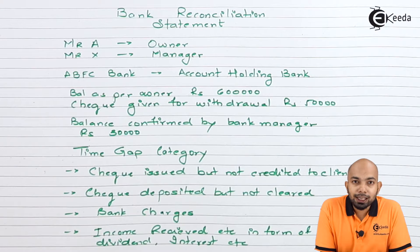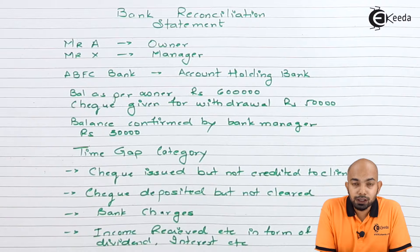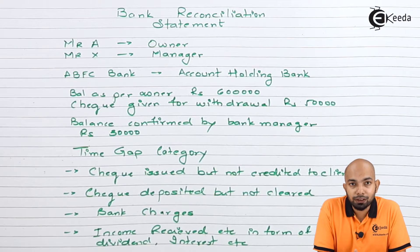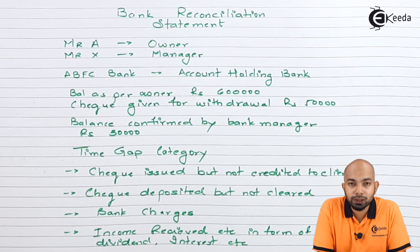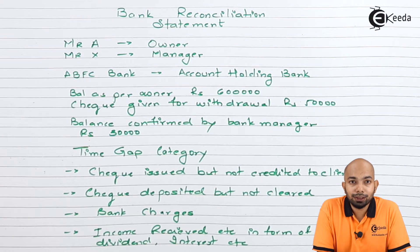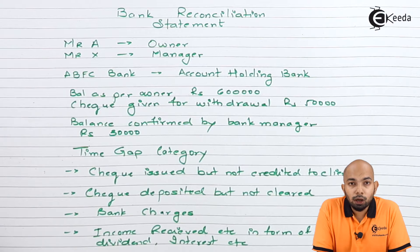Classifying the time gap reasons: the first being a check issued but not yet presented to the bank. As the owner, we have issued a check to a client, however the client has not deposited this check in the bank, so the pass book balance doesn't go down — causing a decrease in our cash book while the pass book balance remains the same. The second reason is a check deposited into the bank but not yet credited, meaning the bank hasn't credited that amount into our account, so the cash book balance shows higher while the pass book shows lower.